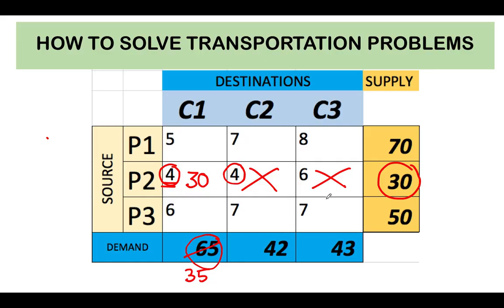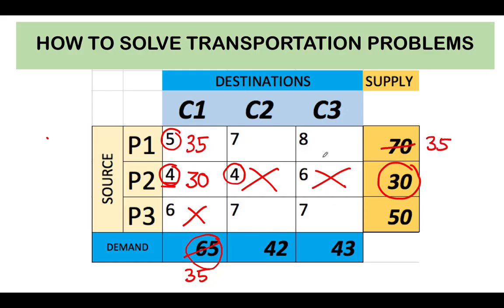For the next step, we inspect costs again and look for the cell with the least cost. The value 5 is the lowest among the remaining costs: 5, 7, 8, 6, 7, and 7. We look at 35 (remaining demand for C1) and 70 (supply from P1). The lowest is 35, so we allocate the entire 35 there. Customer C1's demand is now met. Since we used 35 from P1's supply of 70, there is still a balance of 35 remaining from plant one.